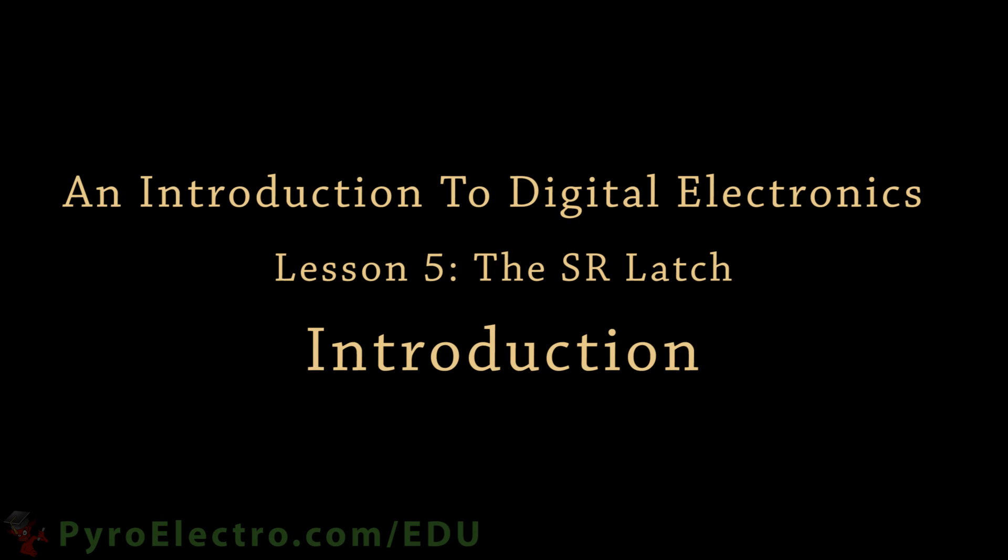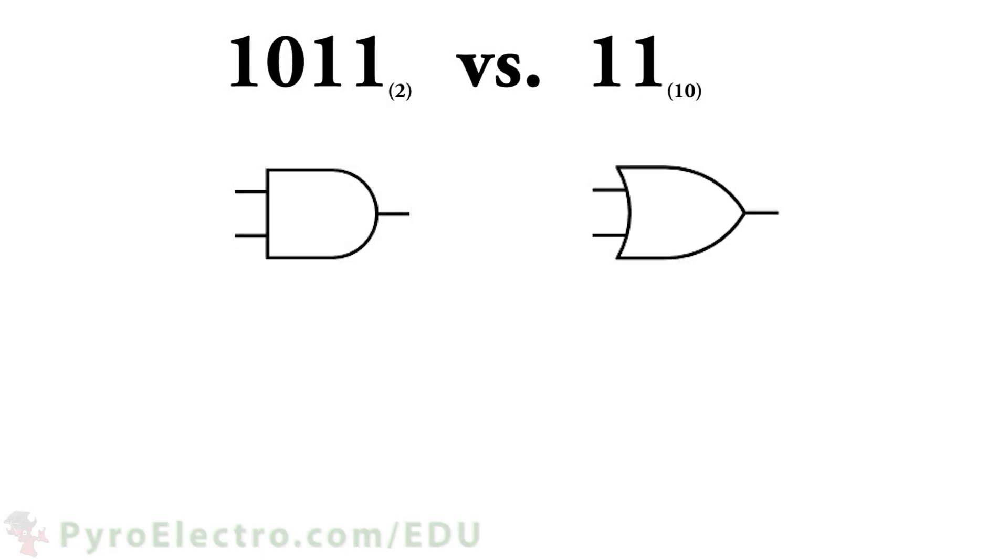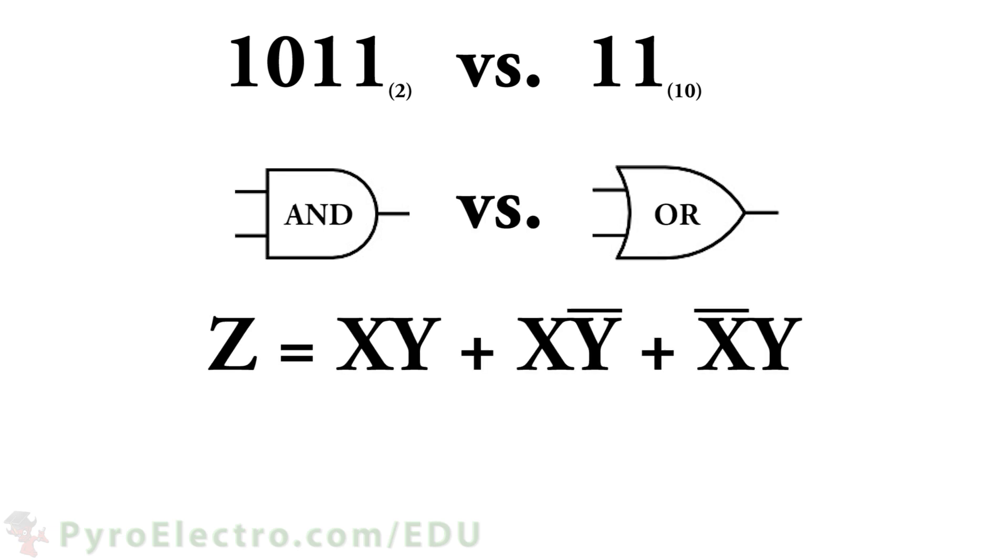Up to this point we have learned about different number systems, logic gates, like AND gates and OR gates, and we dabbled a little with Boolean Algebra and K-Maps.